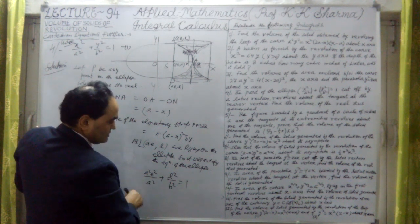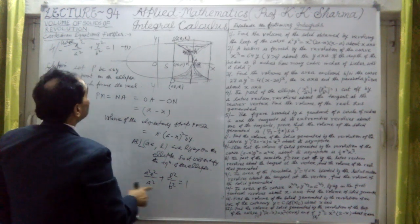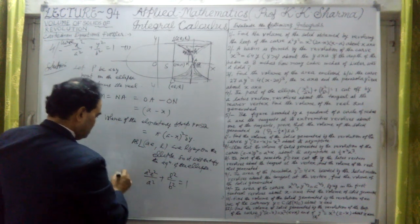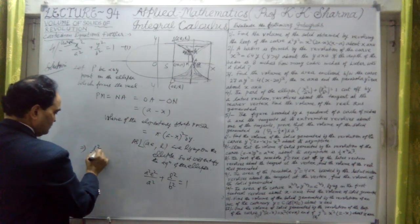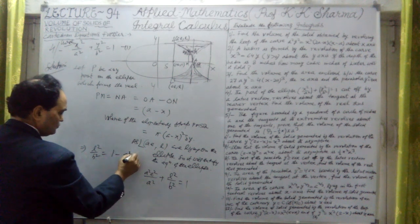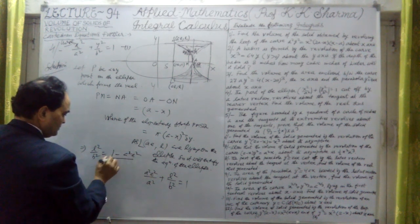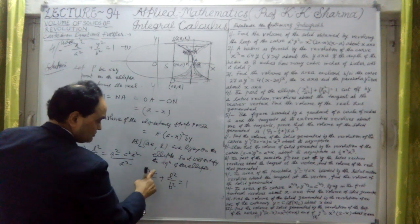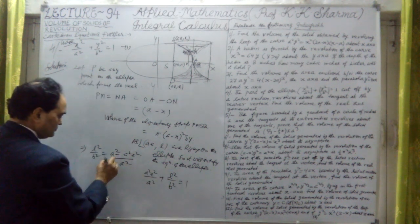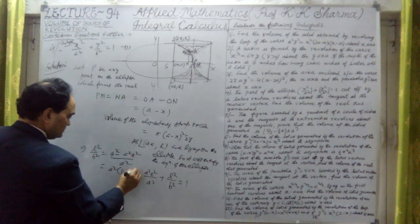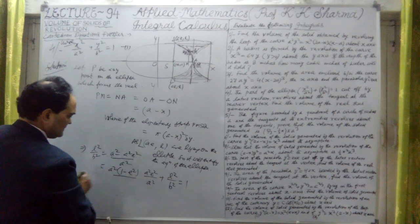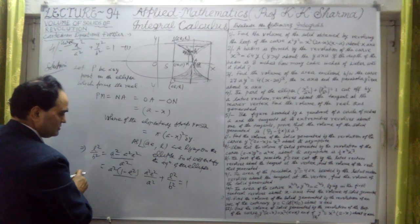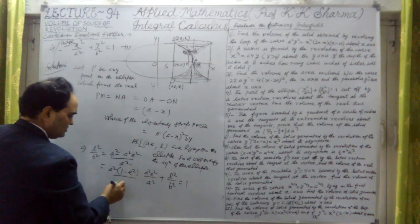What is L squared equal to? From this equation: L squared over B squared equals 1 minus A squared E squared over A squared, which simplifies to 1 minus E squared. So L squared over B squared equals 1 minus E squared upon A squared — taking A squared as common gives 1 minus E squared.